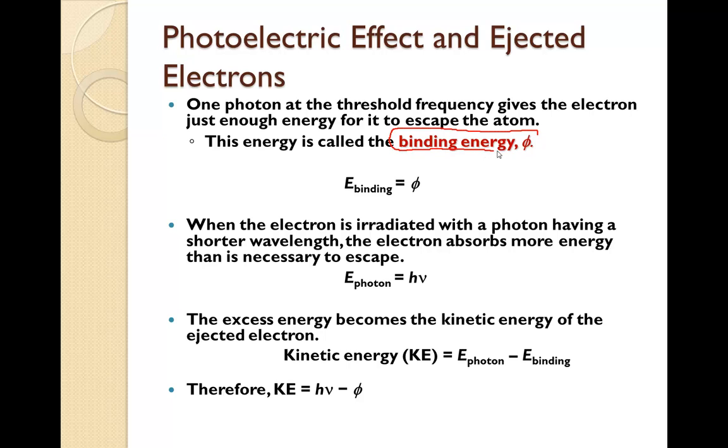So, the binding energy is the energy to escape the atom. When the electron is irradiated with the photon having a shorter wavelength, the electrons absorb more energy than is necessary to escape.